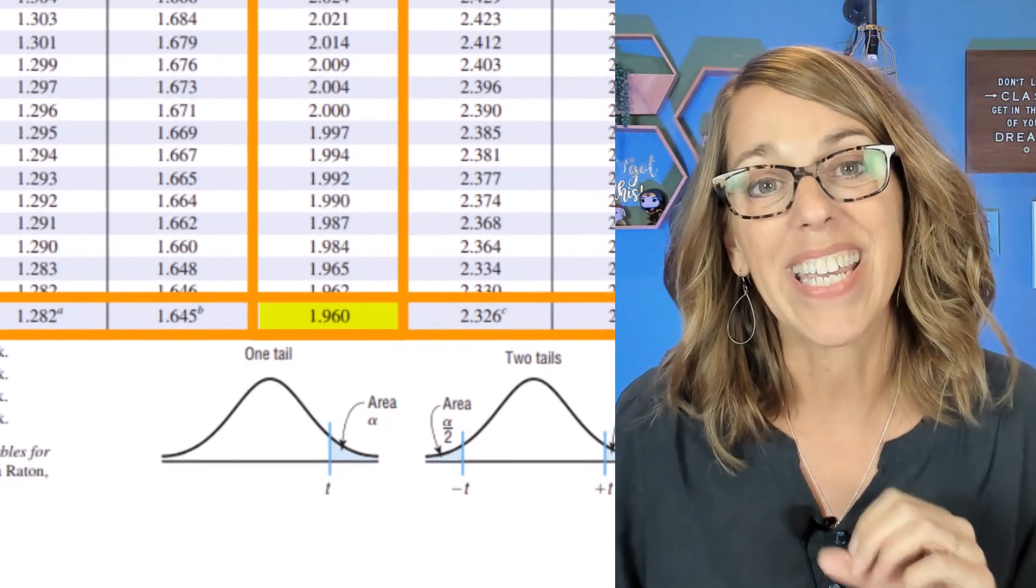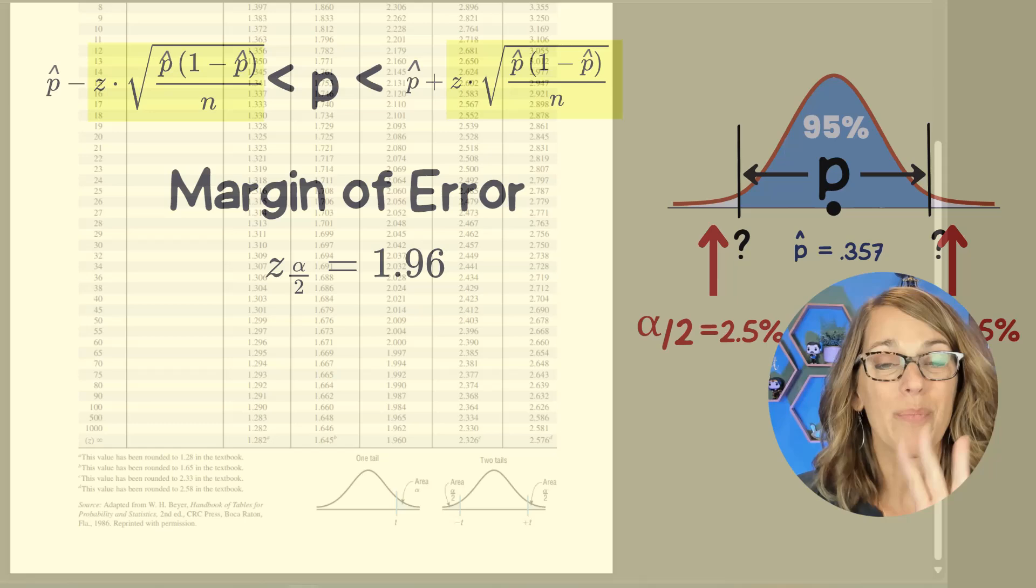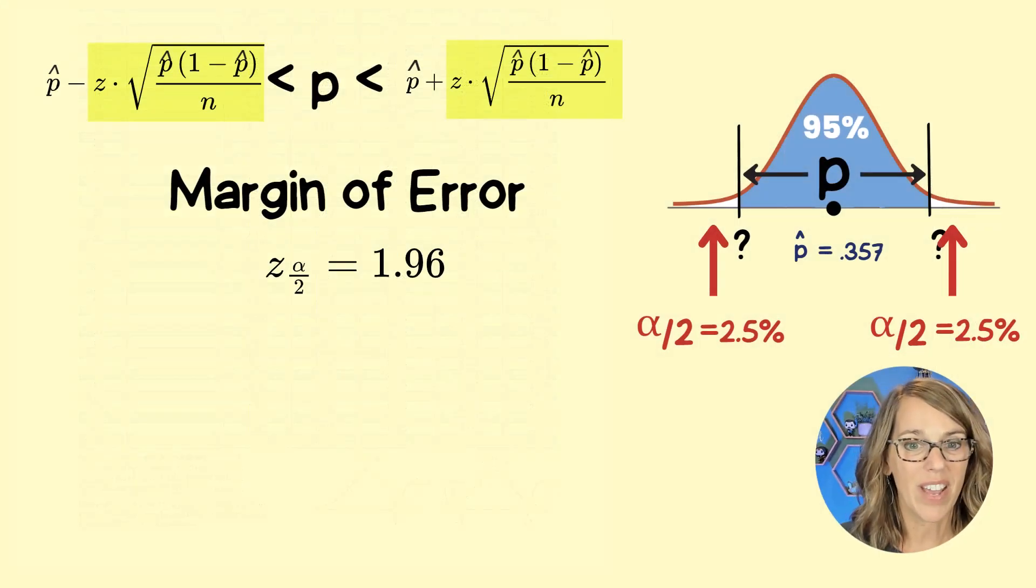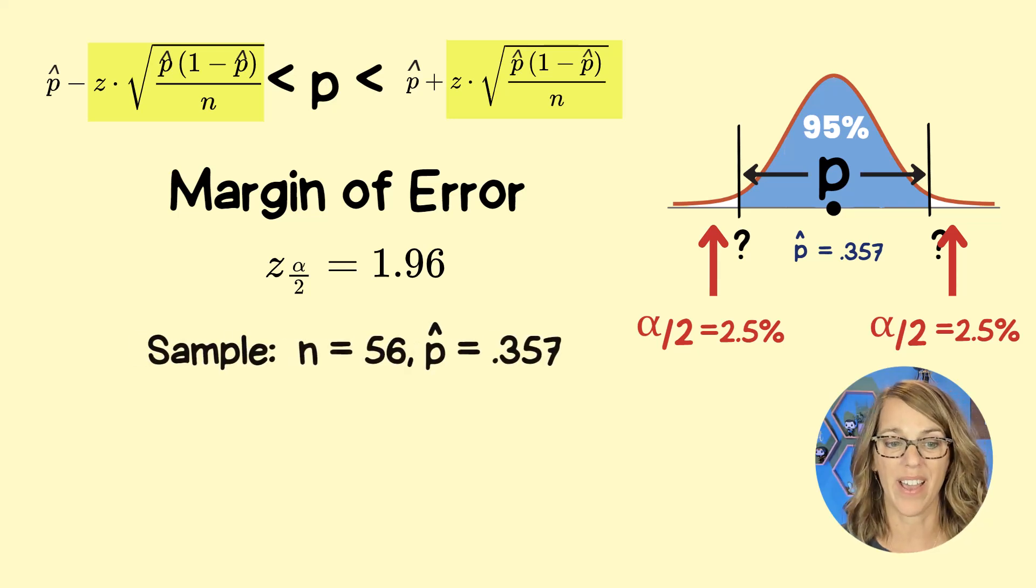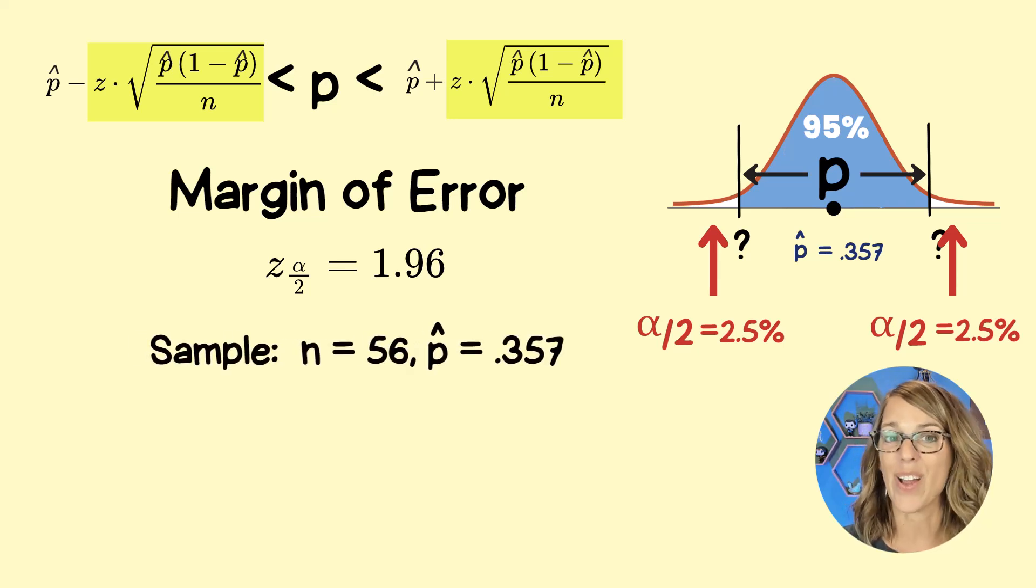Let's put that back into our formula. So I'm ready to compute the margin of error. Now I think I've got everything that I need. Let's bring our sample data back up. So we've got our N and our P hat.